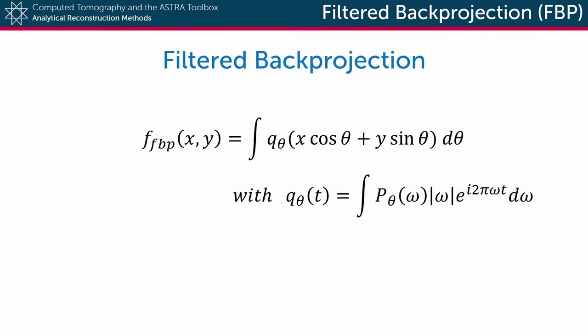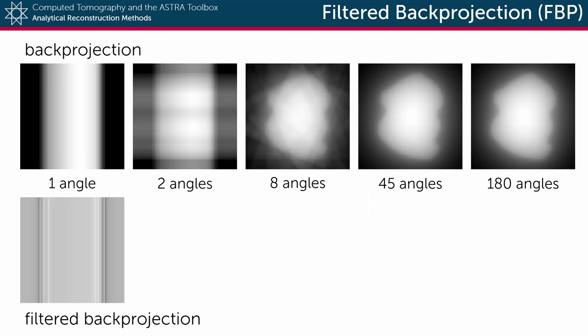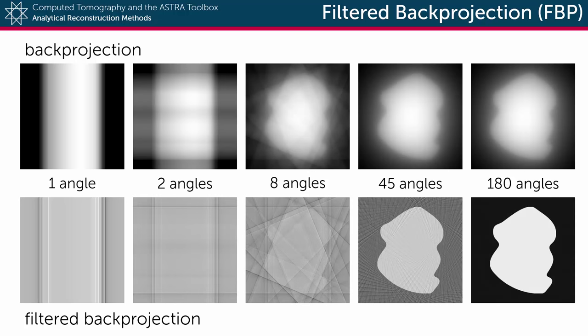Going back to our example, if we back-project one filtered detector function, we get an image where basically only the edges are visible, or smeared out. If we then do this for more projection angles and sum them all up, you do eventually get a nice and sharp reconstruction.